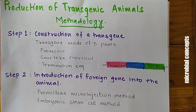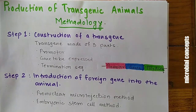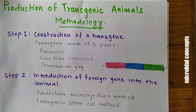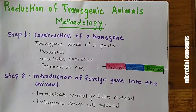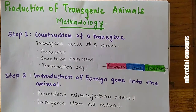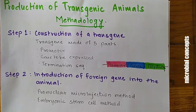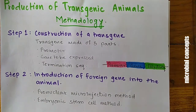Now we will study the methods used to create transgenic animals, followed by methods for producing transgenic plants. The first step is construction of a transgene. A transgene is made up of three parts: first is a promoter, second is the gene to be expressed — the main part of the transgene you want to study — and third is a termination sequence.